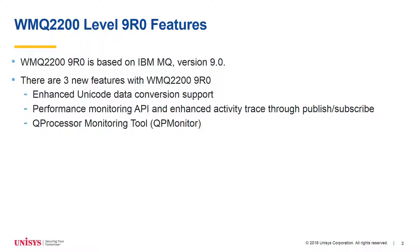The three new features for WMQ 2200 9R0 are: enhanced Unicode data conversion support, performance monitoring API, enhanced activity trace through publish and subscribe, and the key processor monitoring tool, QP Monitor.